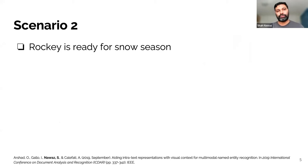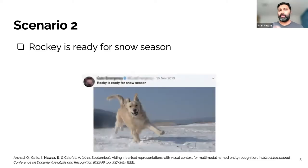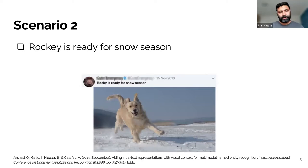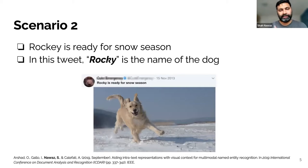Another scenario: if I show you the tweet 'Rocky is ready for snow season,' the word Rocky is ambiguous — we don't know whether Rocky is a human or an animal. However, if we have accompanying image information, we can correctly label this identity as a dog. So multimodal information provides enriched information to label any identity. In this tweet, obviously Rocky is the name of the dog.